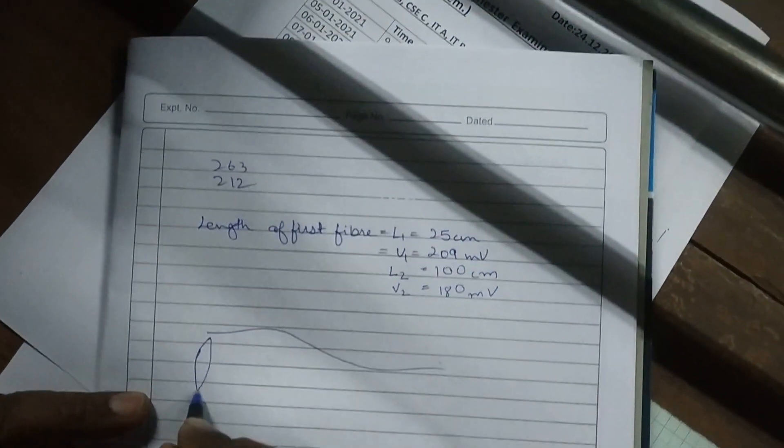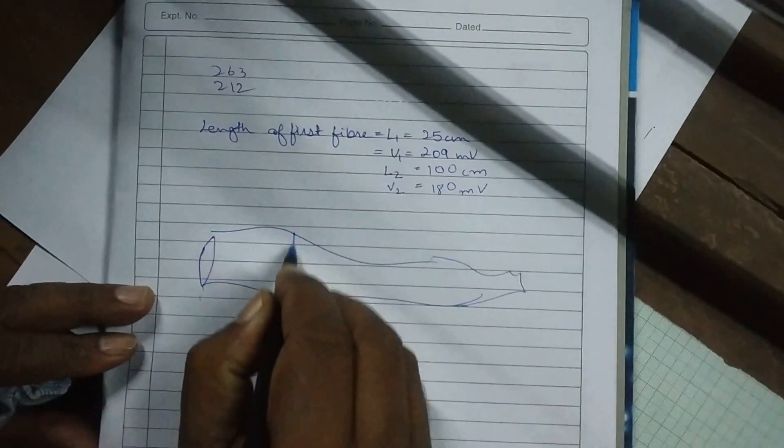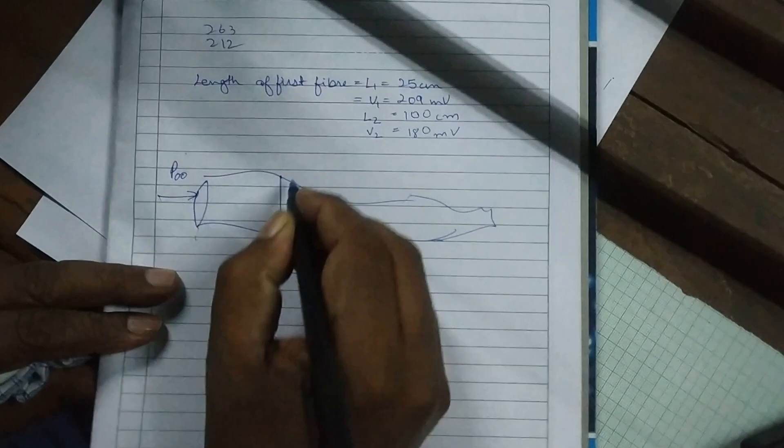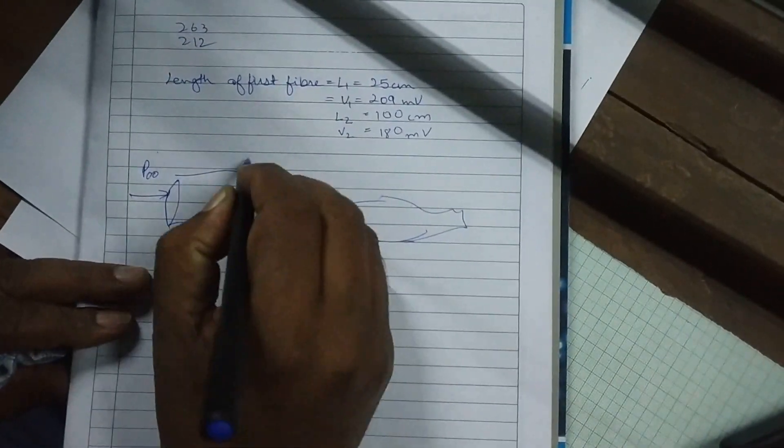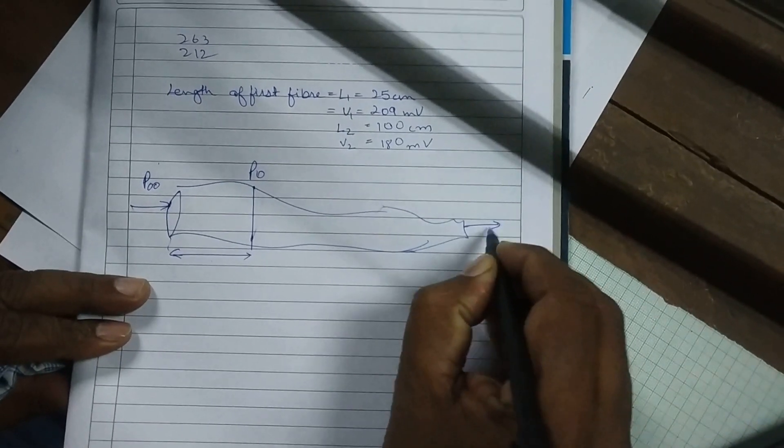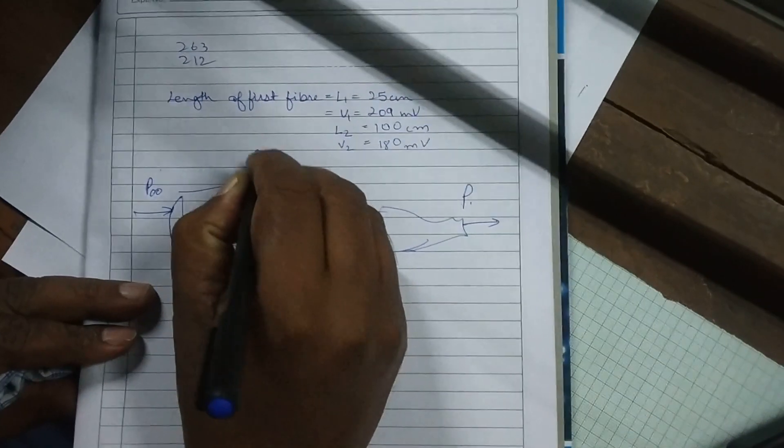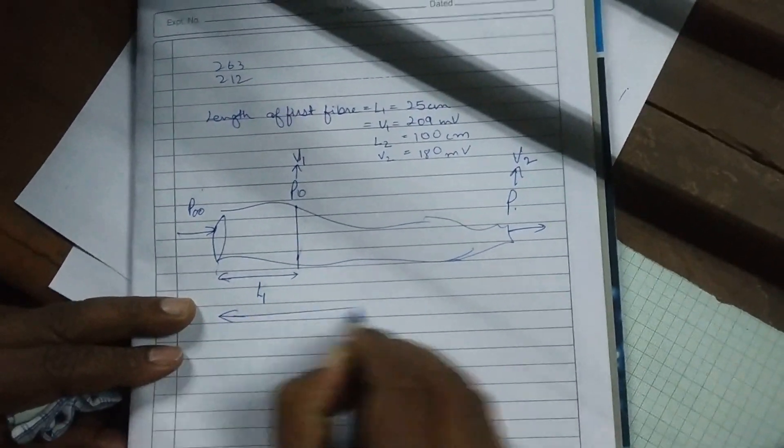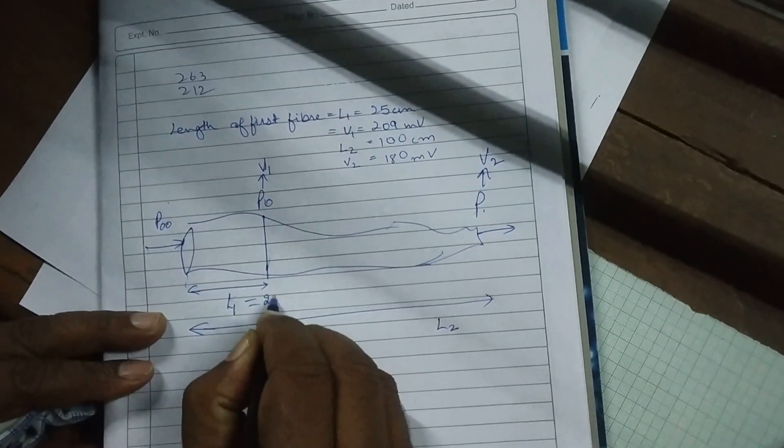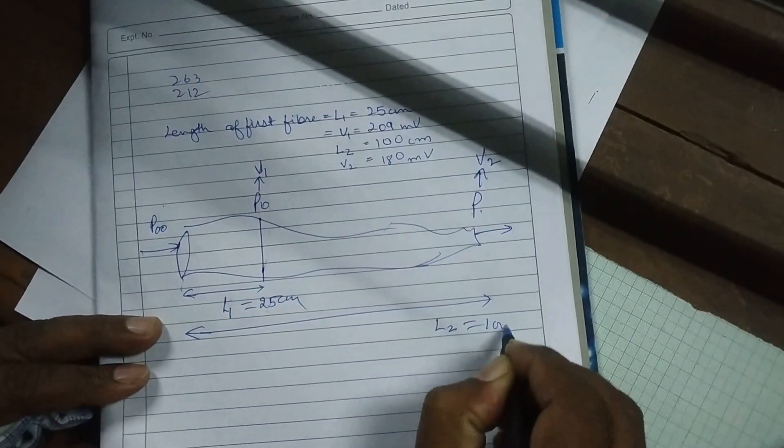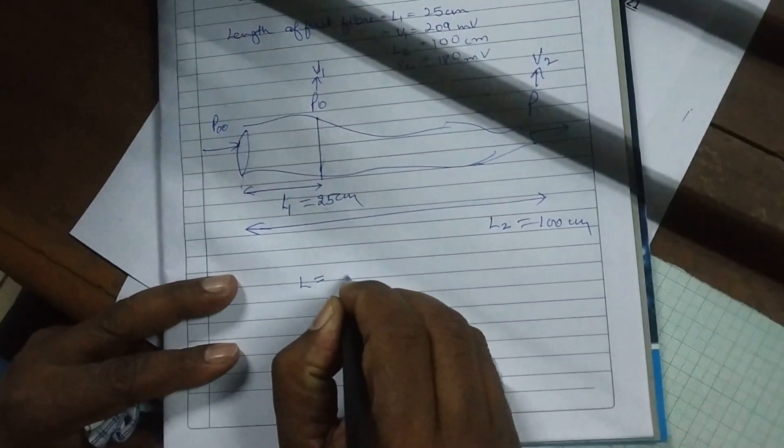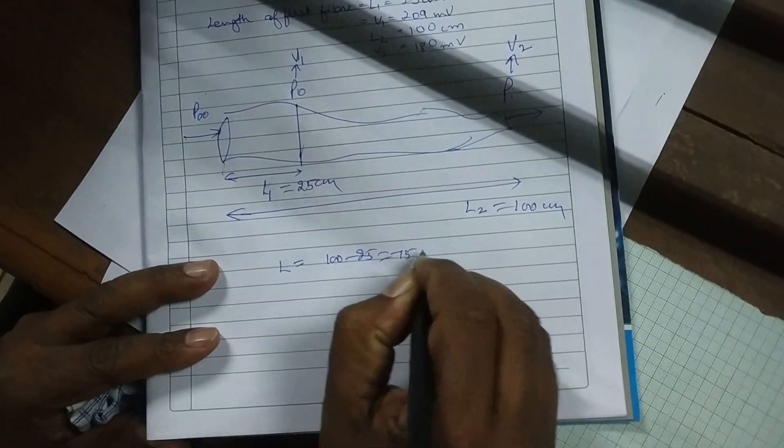So what we have done: some power was entering from here, let us say it was P double zero. After 25 centimeters the power here is P0, and the light coming out from here has power P. The voltage signal generated here is V1, and here is V2. This length was L1 and this length is L2. L1 is actually 25 centimeters and L2 is actually 100 centimeters. The length of the fiber which we have used for calculating attenuation or fiber losses is actually 100 minus 25, that is equal to 75 centimeters.